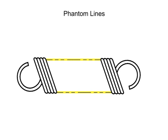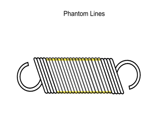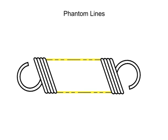Finally, phantom lines are used to show repeated detail. In this view, a spring is depicted. Since the coils of the spring are all the same, it is not necessary to draw them all. Instead, phantom lines are used to illustrate that the coils continue as originally shown.